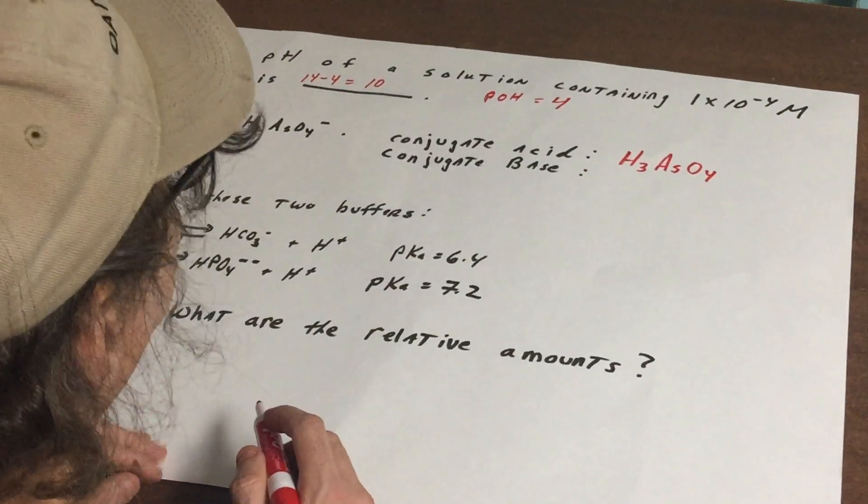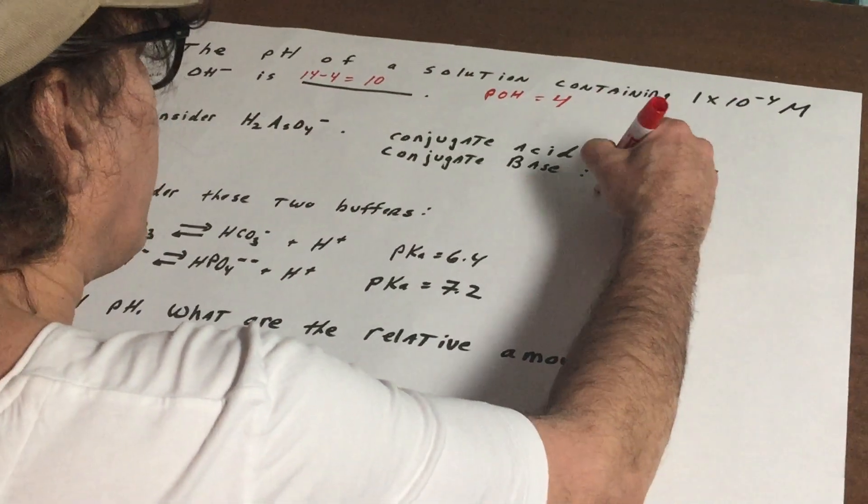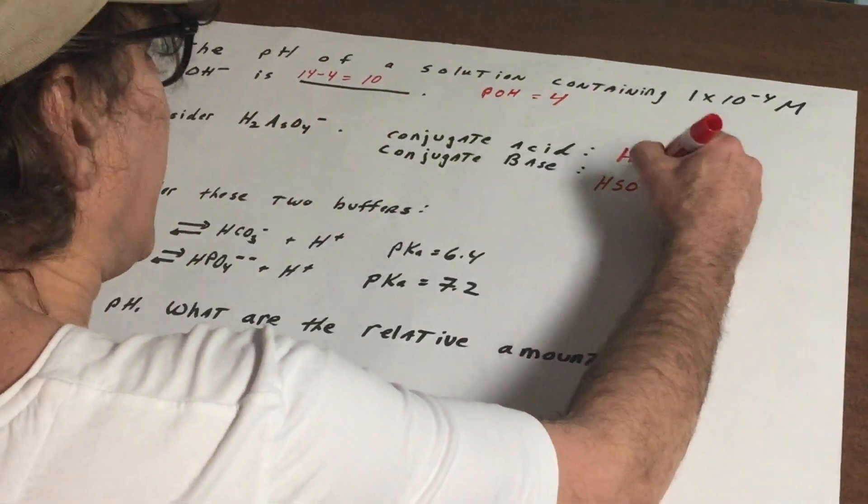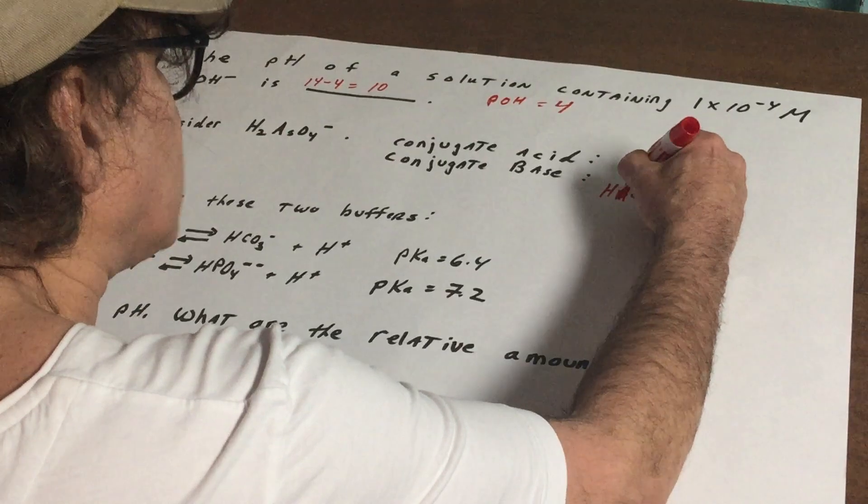For the conjugate base I'm going to remove an H, and every time you remove an H it should be As. Sorry about that.